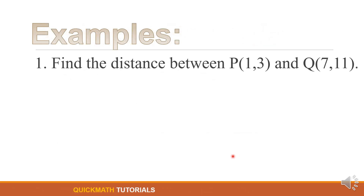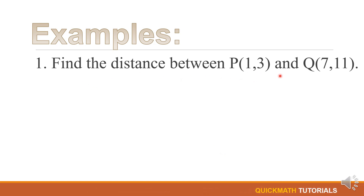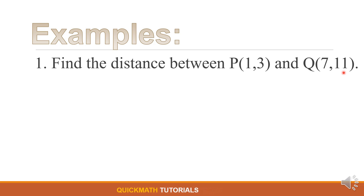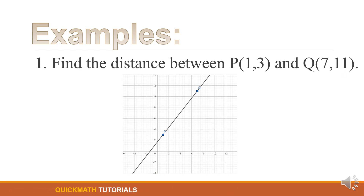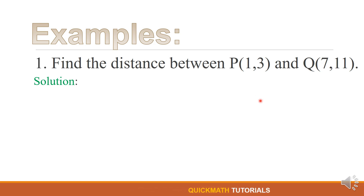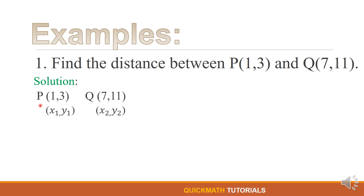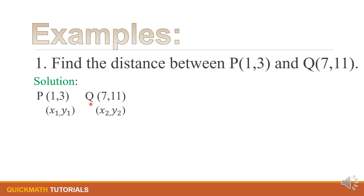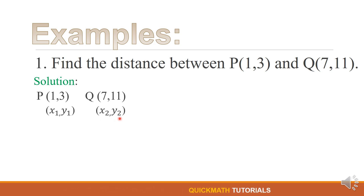Now, let's have our first example. We will find the distance between point P, (1, 3), and point Q, (7, 11). If we will graph these two points, we will have a diagonal line. To solve this problem, let's first identify what will be our first point and our second point. For this example, let P be our first point, so we have x sub 1 and y sub 1, and point Q be our second point, so we have x sub 2 and y sub 2.